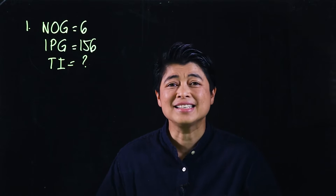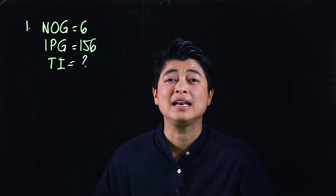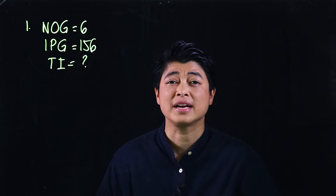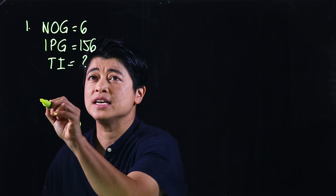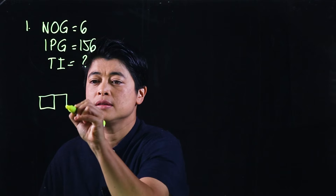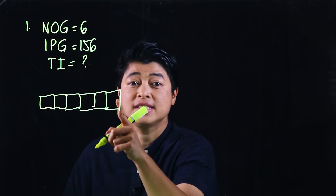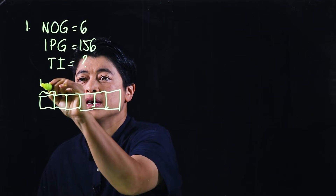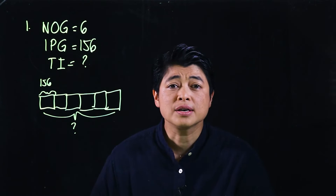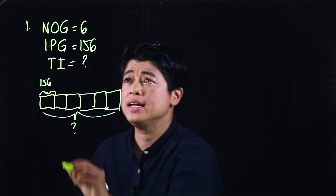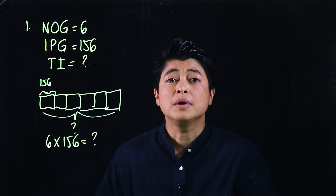This doesn't necessarily need a bar model, but if it helps the kids, allow them — because in all future grade levels they really need to be able to do bar models. The bar model for this would show six boxes, each containing 156, and the question asks for the total.